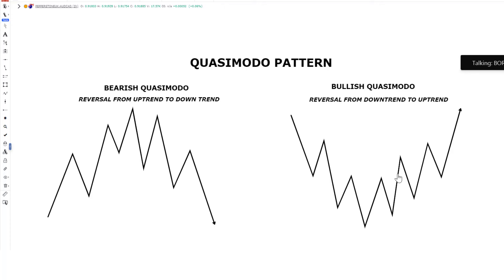We have two patterns on the price charts right now. The first pattern you're going to see is a bearish Quasimodo, and the second one is a bullish Quasimodo pattern. If you're able to spot these two patterns, you're going to make money with them in the financial market. Let's start with the bearish Quasimodo pattern.